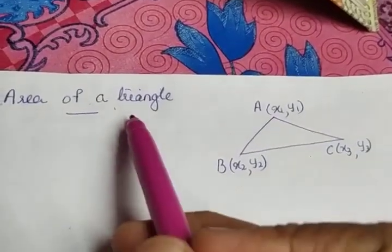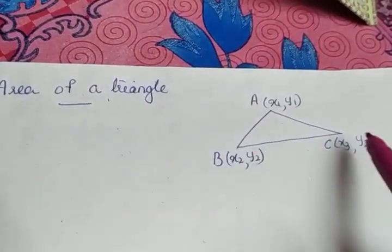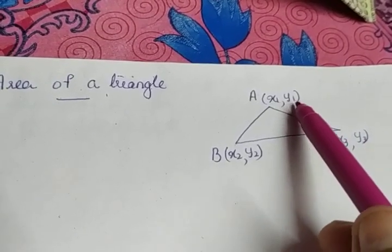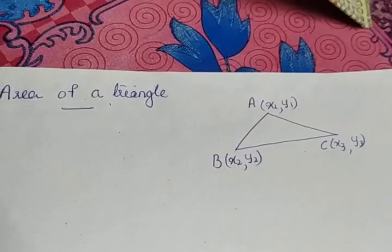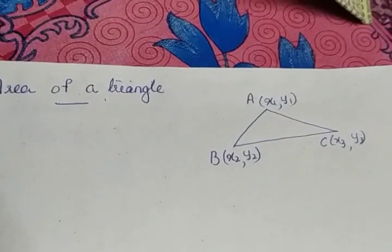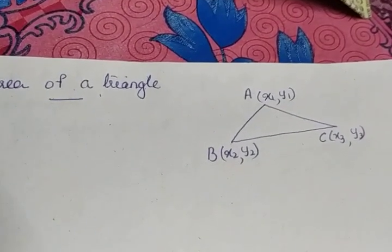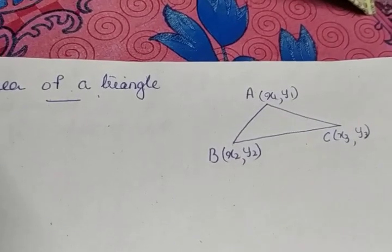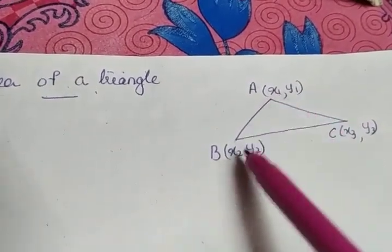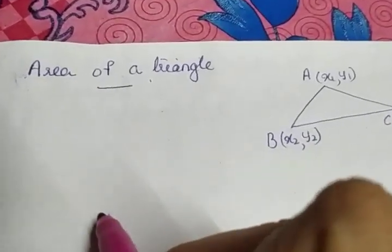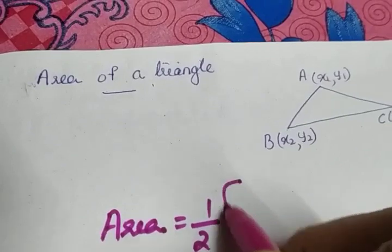The next section is the area of a triangle. Here I took a triangle ABC with coordinates x1 y1, x2 y2, and x3 y3. To find the area of a triangle, we have Heron's formula, the formula half into base times height, and many other methods. Here we are going to apply the formula when the coordinates are given. The formula is given by area is equal to half into...